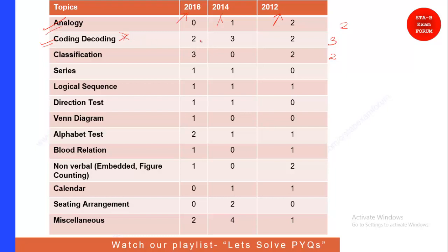Coming to the next topic, Series — again you have seen one question per year, so you can expect one question. In Logical Sequence, which can be dictionary order or arranging given words in logical sequence, we have seen one question, so there will definitely be one question from this topic. It is also a very easy and scoring topic, so you should prepare it well. Direction Test is another good topic and we have seen one question, only in 2012, with no question in other years.